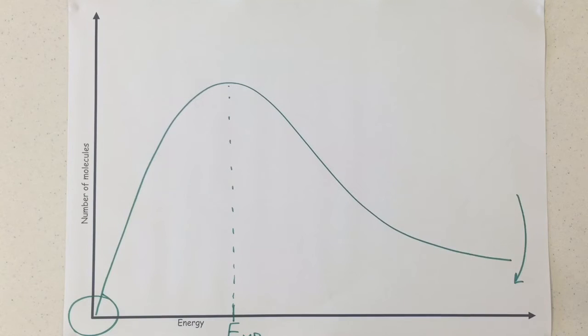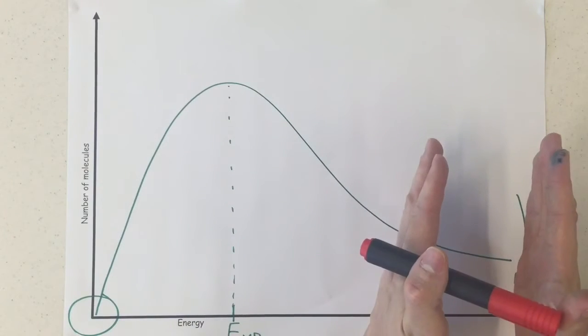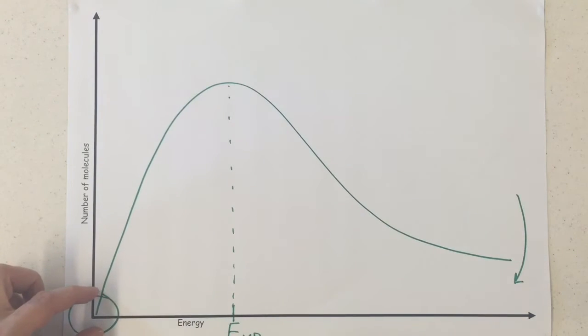Now if you were to increase the temperature, you would see that the spread of energy moves generally over in this direction, but you've got to make sure you're anchored at the bottom here, as you can still occupy these minimum values of energy.